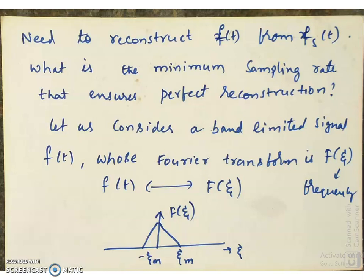We have to make sure that the sampling rate is sufficient to get back the signal F of t from Fs of t. In order to get that, let us assume that F of t is a band-limited signal. A band-limited signal is one having a non-zero spectrum between a given range of frequencies and zero everywhere else. You have to remember: a band-limited signal cannot be time-limited, and a time-limited signal cannot be band-limited. A signal cannot be both time-limited and band-limited. This is because of the Heisenberg uncertainty principle.